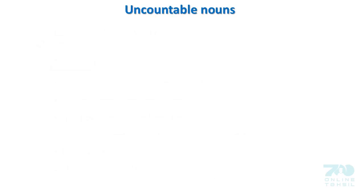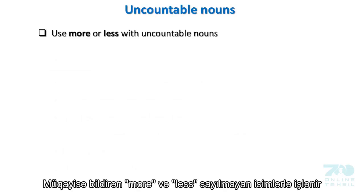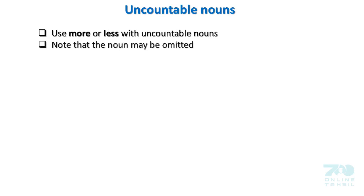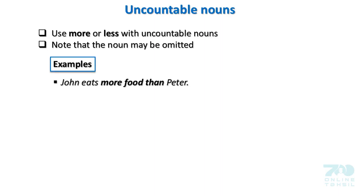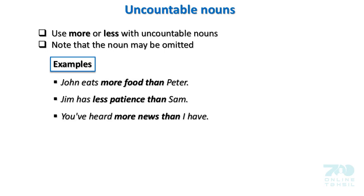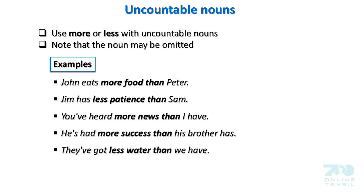Uncountable nouns: Use 'as much' or 'as little' with uncountable nouns. Note that the noun may be omitted when understood from context. Examples: John eats as much food as Peter. Jim has as little patience as Sam. You have heard as much news as I have. He has had as much success as his brother has. They have got as little water as we have. Use 'more' or 'less' with uncountable nouns for unequal comparisons. Examples: John eats more food than Peter. Jim has less patience than Sam. You have heard more news than I have. She has had more success than his brother has. They have got less water than we have.